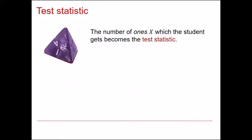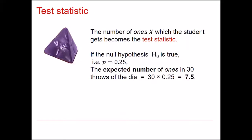So if we carry out this experiment, how many ones would we be suspicious of? The expected number of ones in 30 throws of the die, if it's fair, is 7.5 as you can see on the screen here. And the number of ones that we get when we carry this out is going to be considered the test statistic.